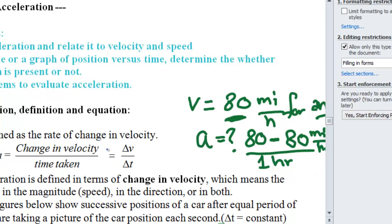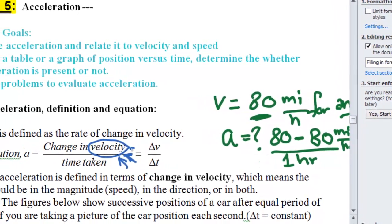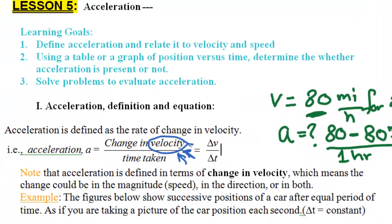Note that the definition of acceleration is change in velocity, not speed. Recall the difference: velocity is speed plus direction, because velocity is a vector quantity while speed is a scalar. Therefore, the change in velocity could be a change in speed, a change in direction, or both. So if a car is moving at constant speed but changing direction, it is still accelerating — even though the speed is constant. When you make a turn, you are changing direction, therefore you are accelerating.